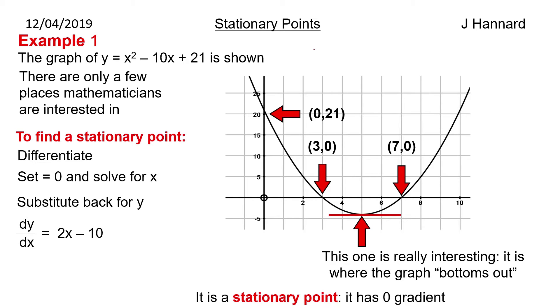So dy by dx is equal to 2x minus 10. That is the gradient finder. Dy by dx is the gradient. We want that gradient to be 0 so we set it equal to 0. We solve for x, so take the 10 over the other side and divide by 2, so x is equal to 5. And then work out what y is. We substitute back into the original equation, so we square 5, we take off 10 lots of 5 and add 21 and we get minus 4. So our stationary point is 5, minus 4.